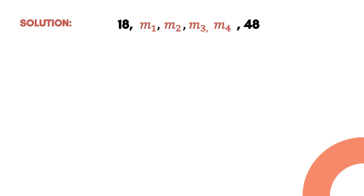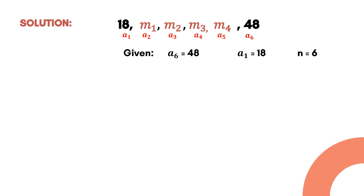We let 18 be the first term. The 4 arithmetic means will be the 2nd through 5th terms respectively, and the last term — the 6th term — is 48. So the given values are: a₆ = 48, a₁ = 18, and n = 6 because we have 6 terms in the sequence. Our unknown value is the common difference.